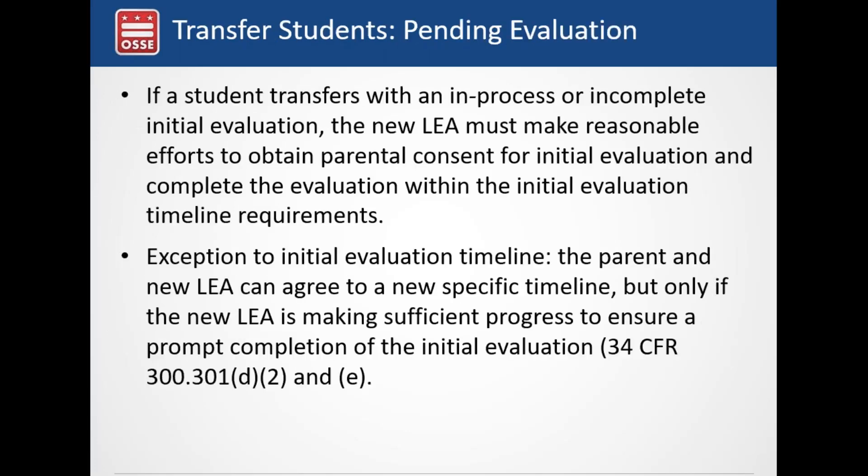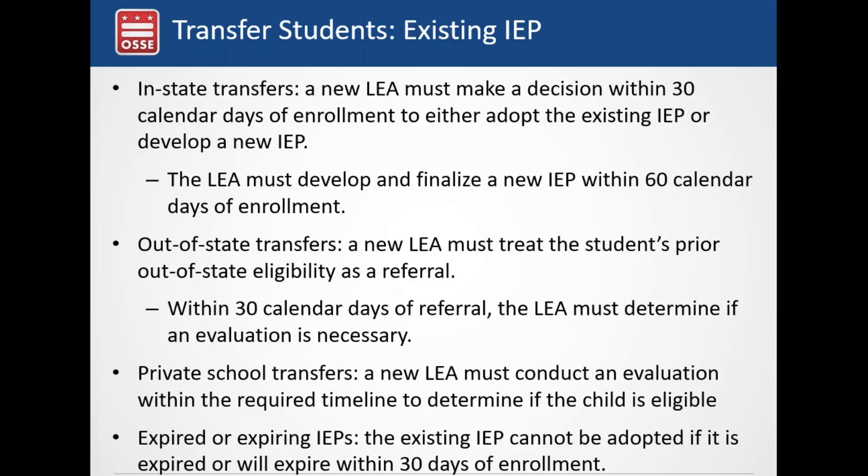If a student transfers with an in-process or incomplete initial evaluation, the new LEA must make reasonable efforts to obtain parent consent for the evaluation and complete it within the timeline requirements — 30 days from referral to make reasonable efforts to obtain parent consent, and 60 days from obtaining parent consent to complete eligibility determination. This is one exception to the initial evaluation timeline: when a student transfers with a pending evaluation, the timeline may not apply if the parent and new LEA agree to a new specific timeline, but only if the new LEA is making sufficient progress to ensure the evaluation is completed.